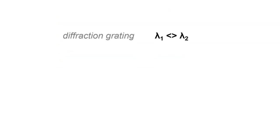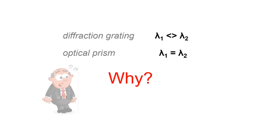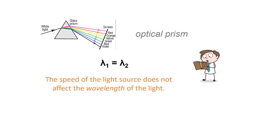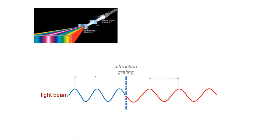This surprises us. The results of measuring the wavelength of light with an optical prism are different from the results of measuring with a diffraction grating. Why? The speed of the light source does not affect the wavelength of the light — it only affects the frequency of light. The wavelength of light changes on the diffraction grating, while the frequency of light does not change.